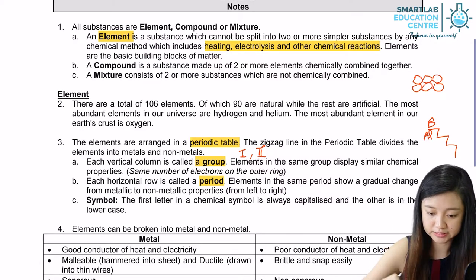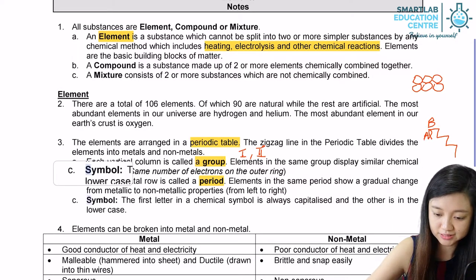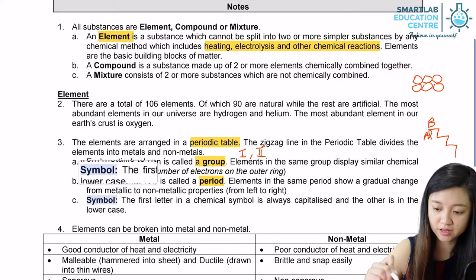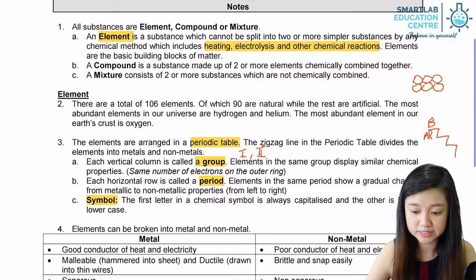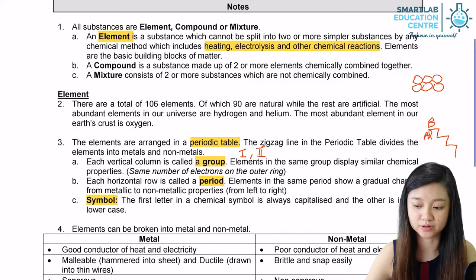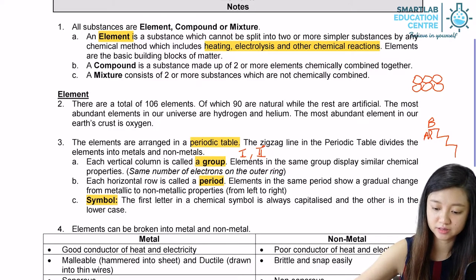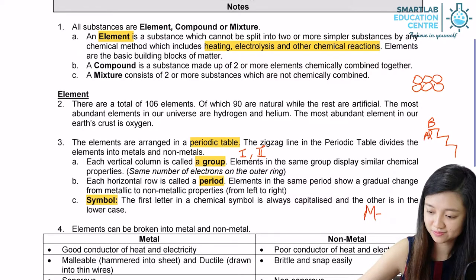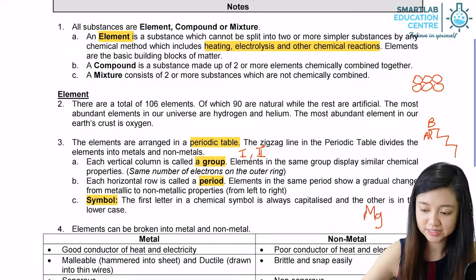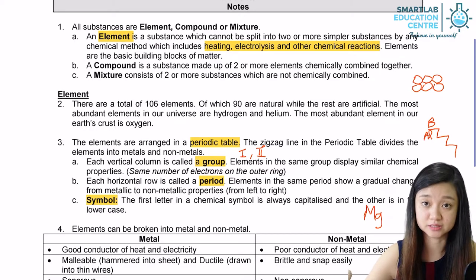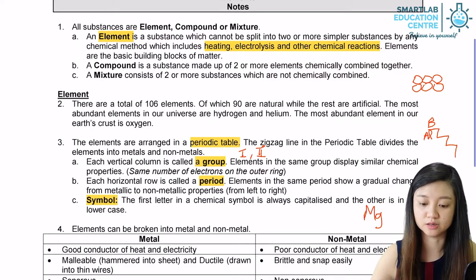When we write the symbol of the elements, we have to bear in mind that the first letter has to always be capitalised while the other letter is in lowercase. Take, for example, magnesium — the first letter will be the capitalised letter M, while the G will be in the lowercase.